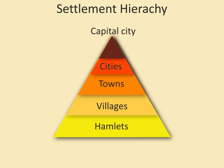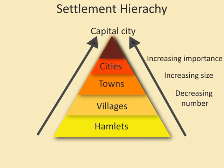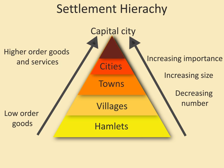When we're looking at the settlement hierarchy, it's important to keep in mind that as we go up it, the number of settlements decreases but their size in terms of population increases. Their importance increases and the number and range of goods and services they offer also increases, and you're likely to get higher order goods the higher up the hierarchy you go. Because of that, the bigger settlements are going to have a larger sphere of influence.